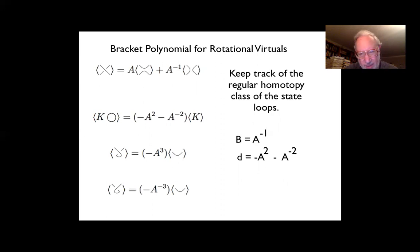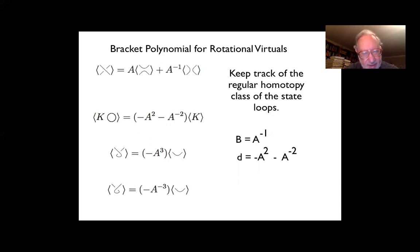For rotational virtuals, all loops with virtual crossings are assigned D, but we watch those loops and take their regular homotopy class. When you do that, you get an invariant: a Laurent polynomial with coefficients multiplying regular homotopy classes of certain loops. Let's look at an example.